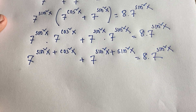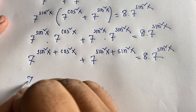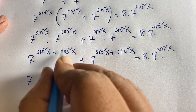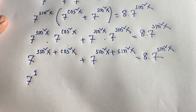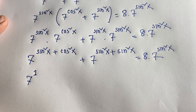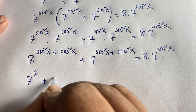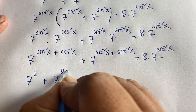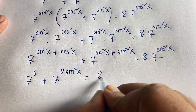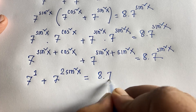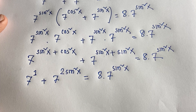Now I can simplify. We know that sin squared theta plus cos squared theta equals 1. So 7 to the power sin squared x plus cos squared x equals 7 to the power 1, which is 7. The equation becomes: 7 plus 7 to the power 2 sin squared x equals 8 times 7 to the power sin squared x.